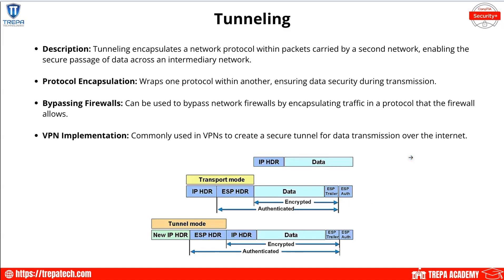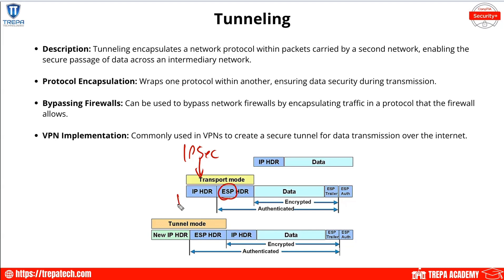Tunneling essentially is us encapsulating our Layer 3 header to provide a VPN. Here we can see IPsec tunneling examples: with transport mode we add an ESP header, and with tunnel mode we add an ESP header and a new IP header to encapsulate the original IP header.